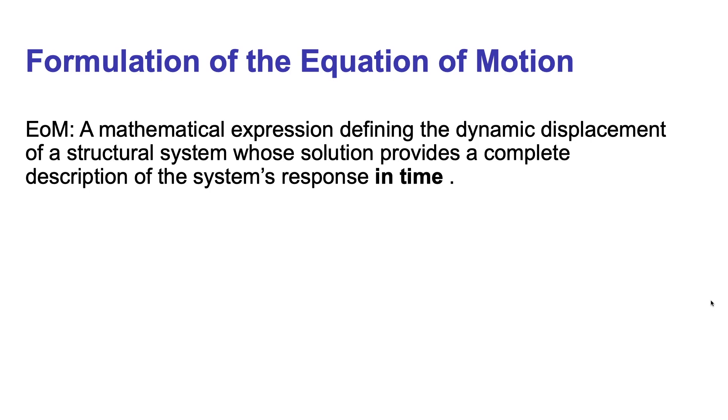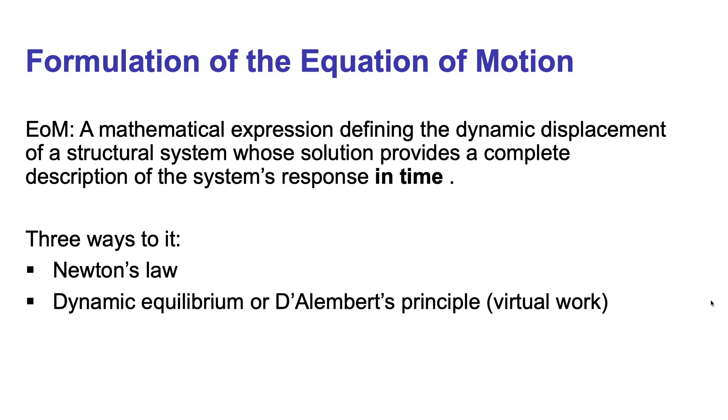There are at least three ways in which that equation can be formulated for any given system. First, by means of Newton's second law of motion. Second, by establishing dynamic equilibrium through the principle of D'Alembert that is intimately related to the virtual work principles. And finally, by energetic principles leading to Lagrange's equation. In this video, we will only introduce the first two.